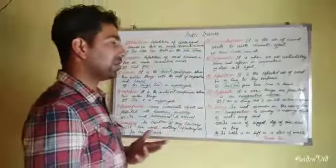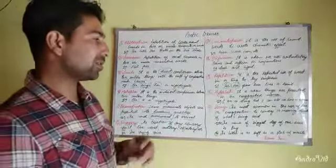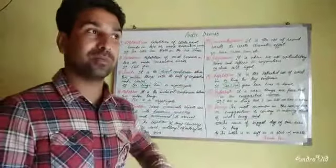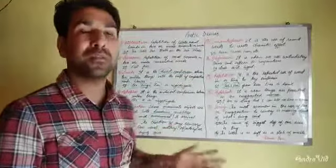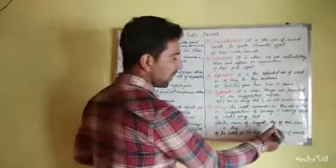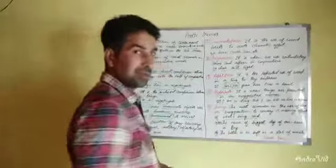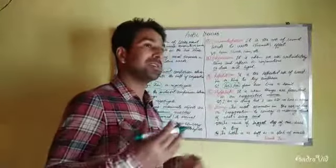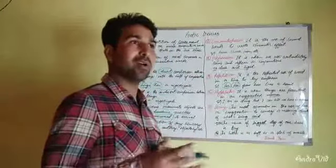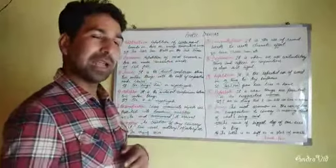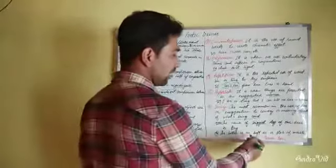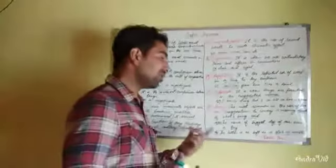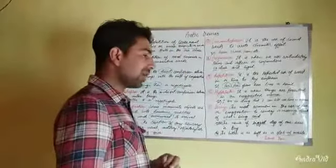Irony is the use of tone or expression to convey a meaning opposite to what is literally said. When you say something but intend to mean something different, it is irony. For example: 'The name of the biggest dog in our area is Tiny' — the biggest dog is called 'Tiny,' which is ironical. Another example: 'The butter is as soft as a slab of marble' — meaning the butter is actually very hard, the opposite of what is said.